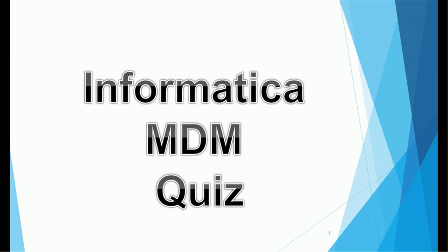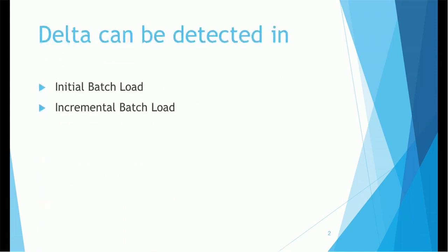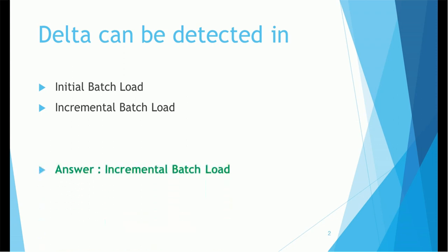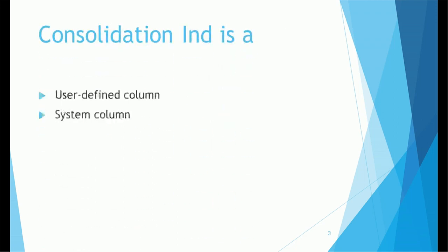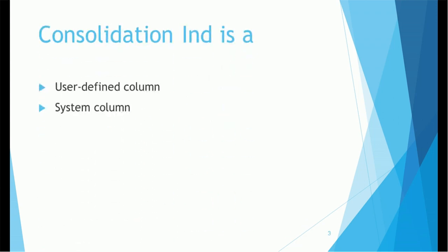Let's start. The very first question: Delta can be detected in — initial batch load or incremental batch load? I'm sure you definitely know the answer. The correct answer is incremental batch load.